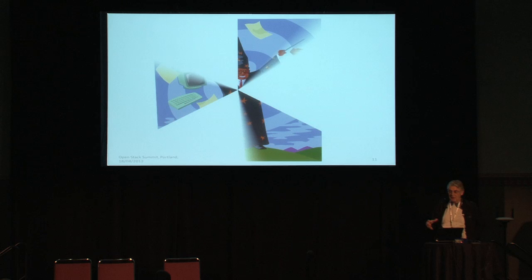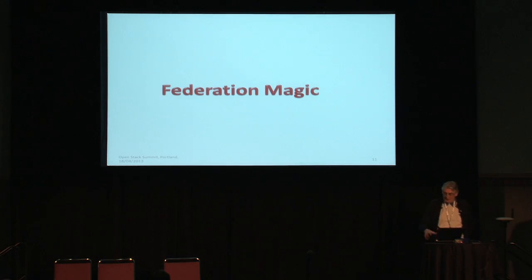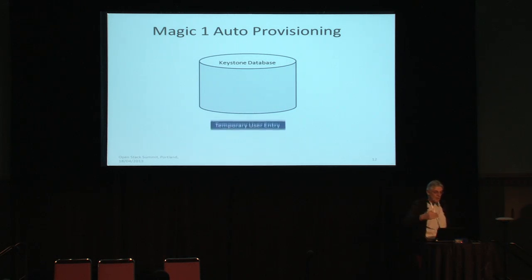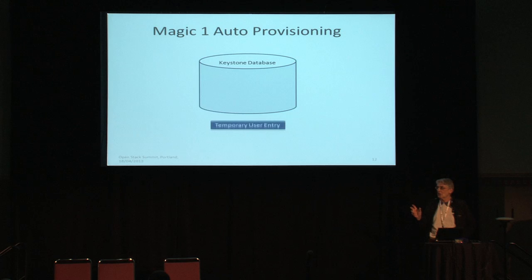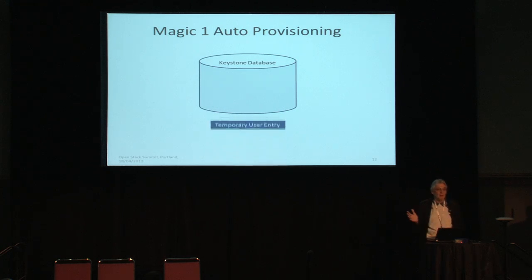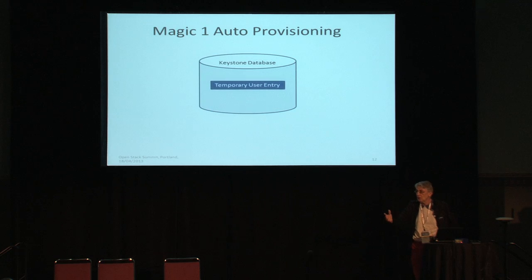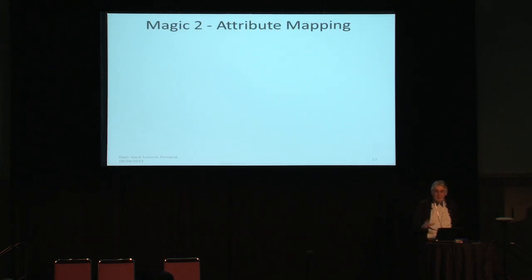There are two pieces of magic in federation. First is auto-provisioning: there are no pre-existing users in the Keystone database. When a user logs in via an IDP, a temporary entry is created in Keystone with a validity time matching the assertion. When that validity time expires, the entry is removed. There's no provisioning work for the Keystone administrator — every time the user logs in, the temporary entry is recreated with the same parameters, unless the user's attributes have changed such as through a promotion.